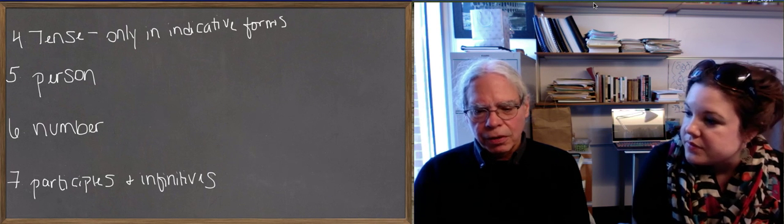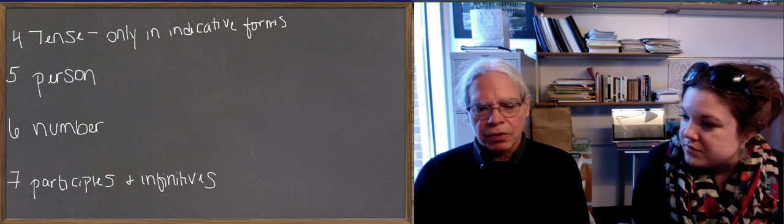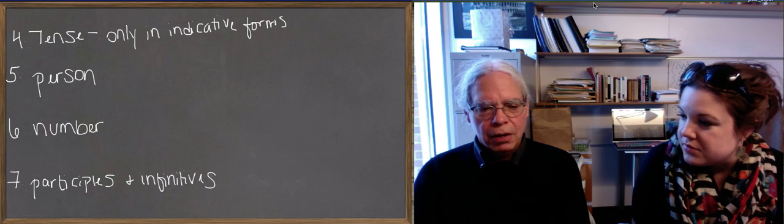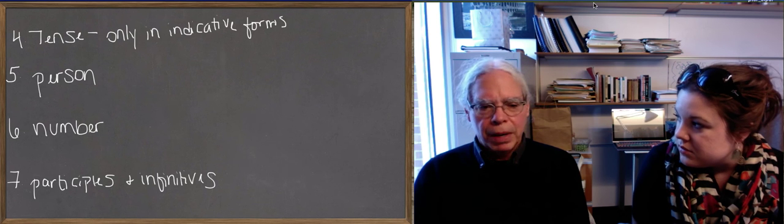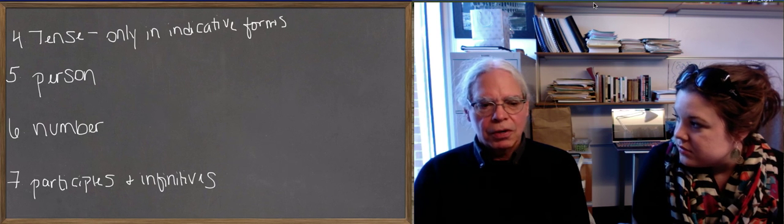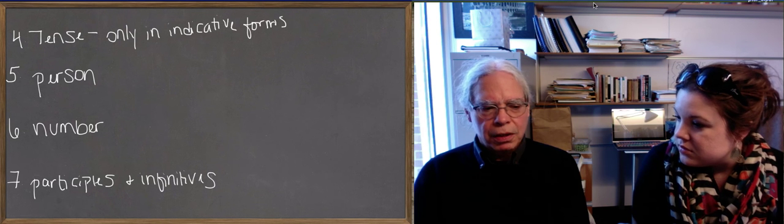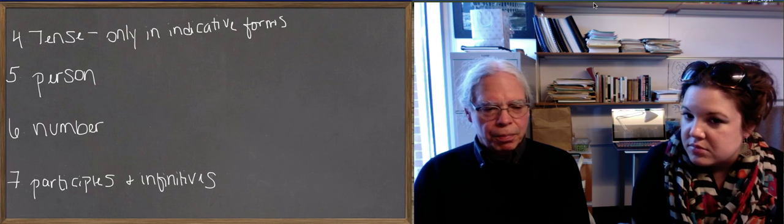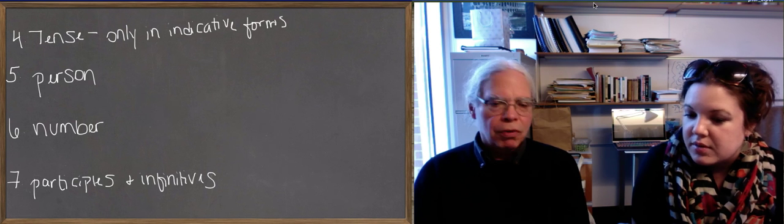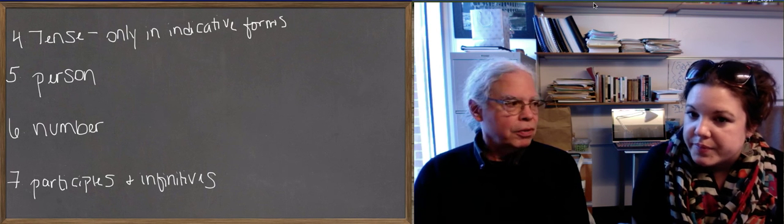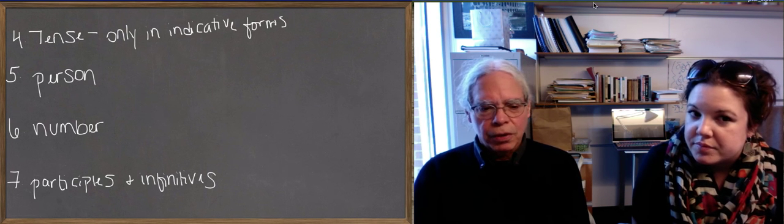And those are not the same as aspects. So you can have, in the imperfective aspect, you can have a present, a past, and a future. So the present of the imperfective aspect is, I am speaking Greek. The past is, I was speaking Greek. We're talking about ongoing processes. And the future is, I will speak Greek.